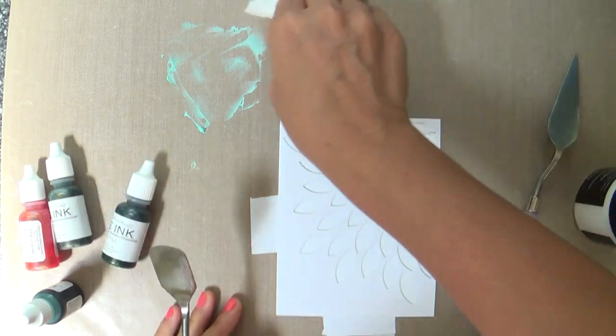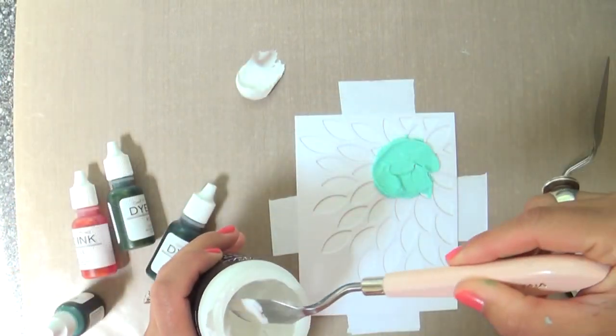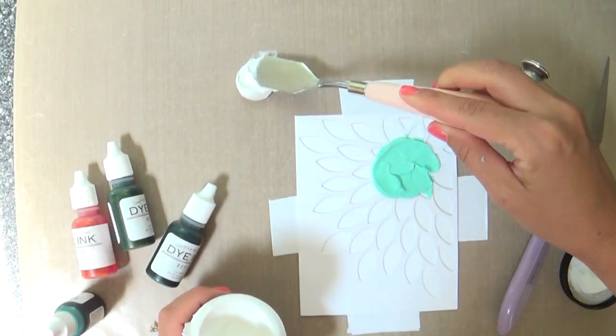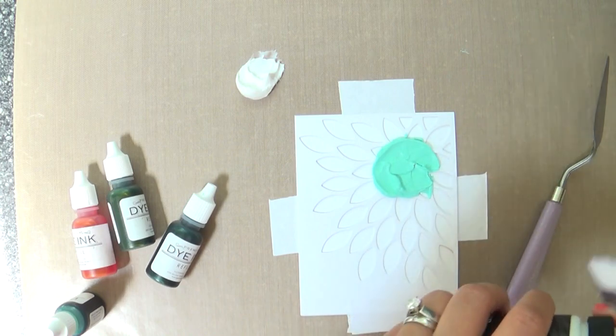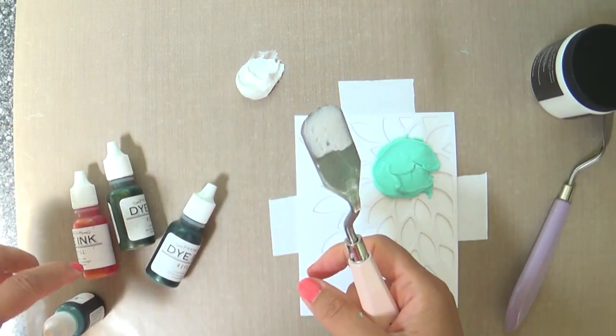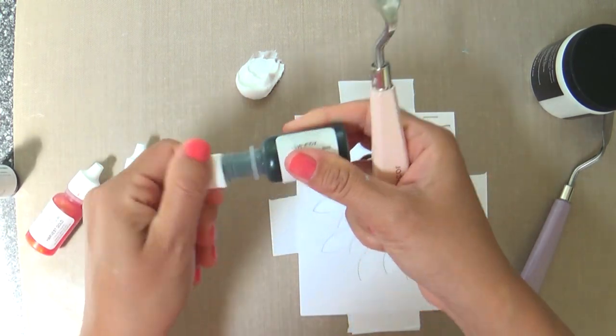So once we get our Hawaiian Shores embossing paste clear up our area and then start again with some more white embossing paste and then I'm going to add the next color of reinker I use is aqua mist and so I'll add a drop of that. This is great.